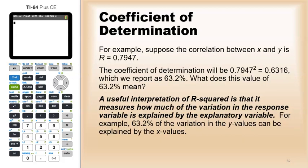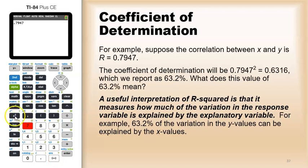So one example, suppose the correlation between x and y is 0.7947. Now 0.7947 squared comes out to be about 0.6316, so about 63.2%. Again, what does this mean?